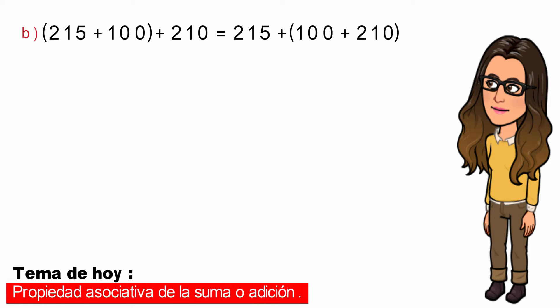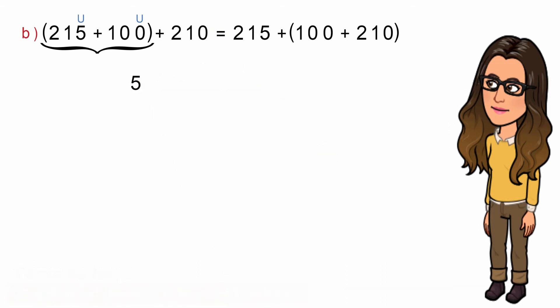Ahora vamos a resolver lo que está dentro de los paréntesis a ambos lados. Comenzando por el lado izquierdo, identificamos la cifra de la unidad y sumamos: 5 más 0 es igual a 5. Identificamos la cifra de la decena y sumamos: 1 más 0 es igual a 1. E identificamos la cifra de la centena y sumamos: 2 más 1 es igual a 3. Y nos quedaría 315 más 210.